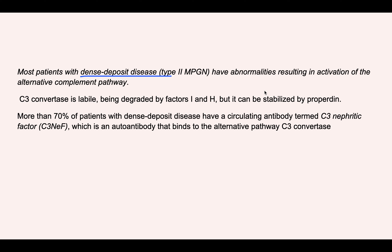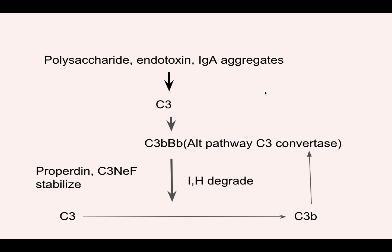Type 2, dense deposit disease, involves abnormalities in the activation of the complement system — specifically the alternative pathway. In the alternative pathway, bacteria and endotoxins activate C3 to form C3 convertase. This C3 convertase is a labile enzyme. Certain factors help stabilize it and others help degrade it. Ultimately, C3 convertase converts C3 into C3b.